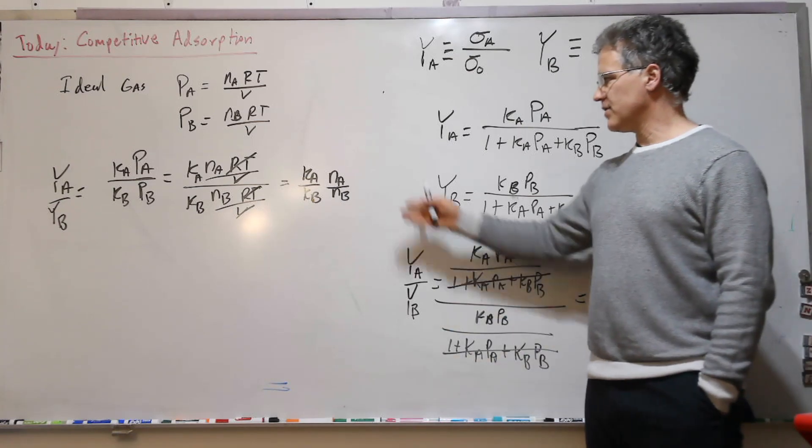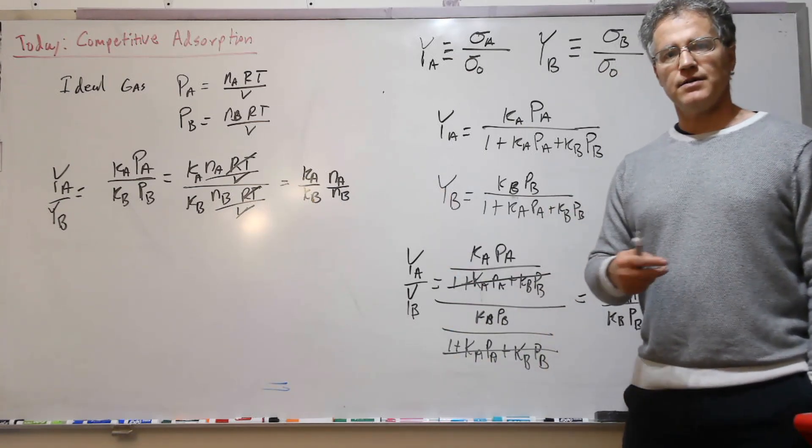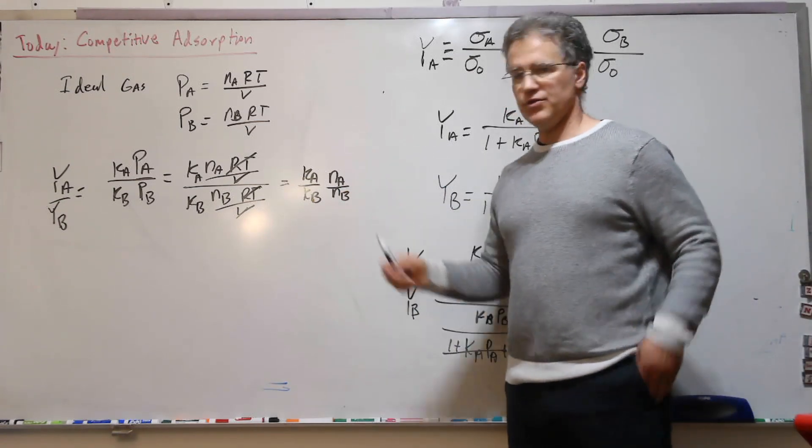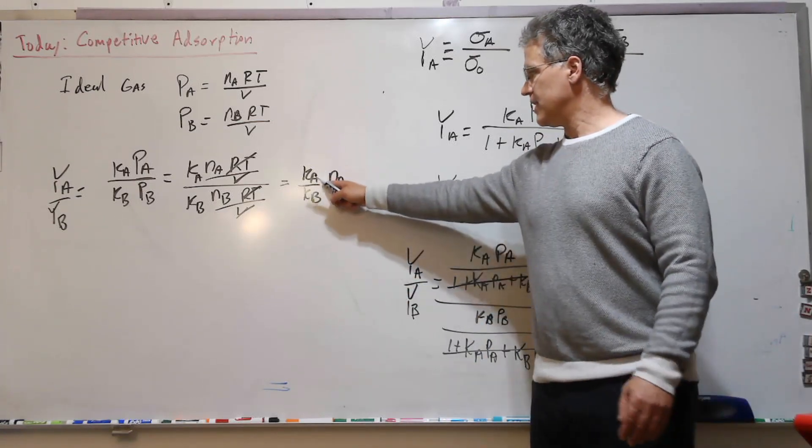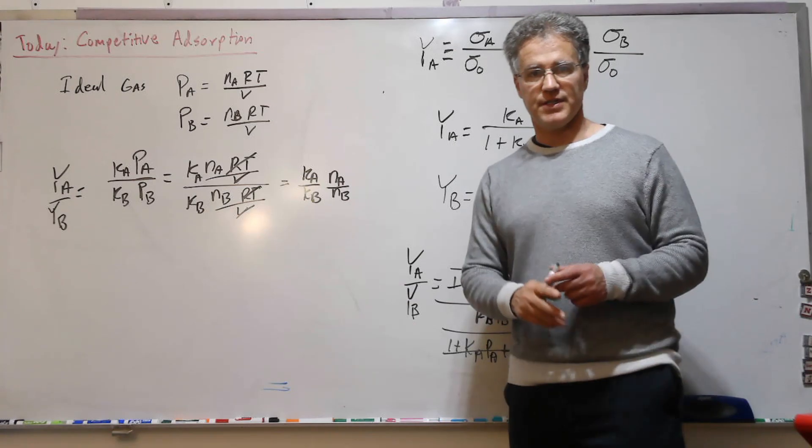And again, that makes sense. If we have more moles of A around than B, then that's going to contribute to a larger fraction of A being occupied compared to B, but then also accounting for the different K's.